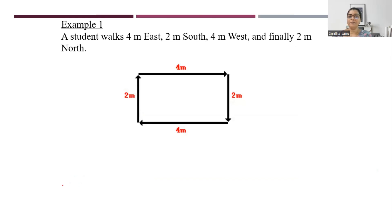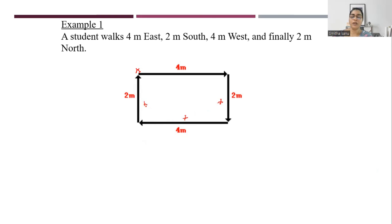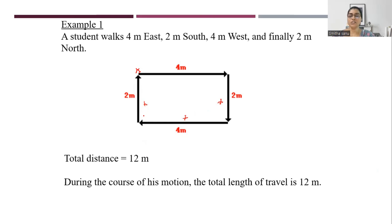Let's see an example. There is a park. A person starts at X and comes back to X. He moves 4 meters east, 2 meters south, 4 meters west, and 2 meters back. The distance is the length of the actual path: 4 + 2 + 4 + 2, which gives 12 meters. So the distance traveled by the person is 12 meters.